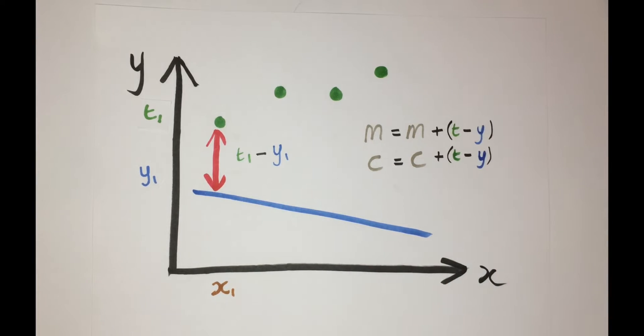But since the output of our model is influenced by the weight by a factor of x, we need to also multiply x in the weight's update value as well. So now that we have our updating policy, let's investigate the code of how this would actually work.